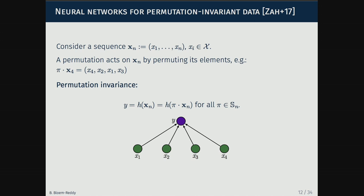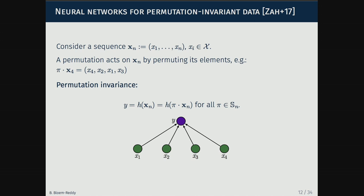The simplest example to visualize is permutation invariance — this was the Deep Sets paper. If you consider an input sequence and act on it with a permutation π that shuffles the elements, and you want the output to be invariant to all permutations, the types of problems include set completion: treat the elements in a shopping basket — it doesn't matter which order you see them — it's what's in the basket, and you want to suggest one more item.